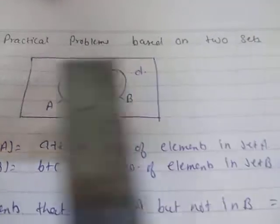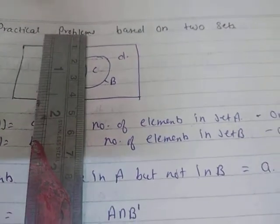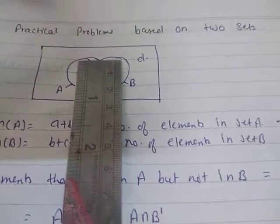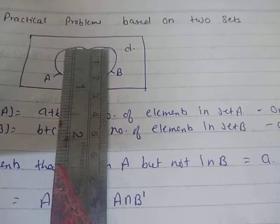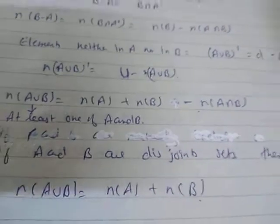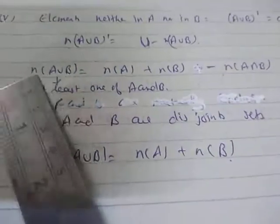Elements that are in B but not in A is c, and you can find this as n(B) - n(A∩B). Elements neither in A nor in B is d, and this is your (A∪B) complement, which equals the universal set minus n(A∪B). The number of elements in A∪B is also termed as 'at least one of A or B'.